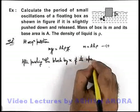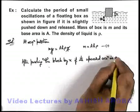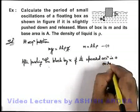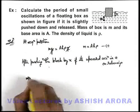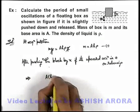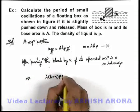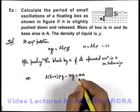If its upward acceleration is a, on releasing this implies we'll be having a relation net upward force will be A times h plus x times ρg minus mg is equal to ma. That'll be the equation of motion.